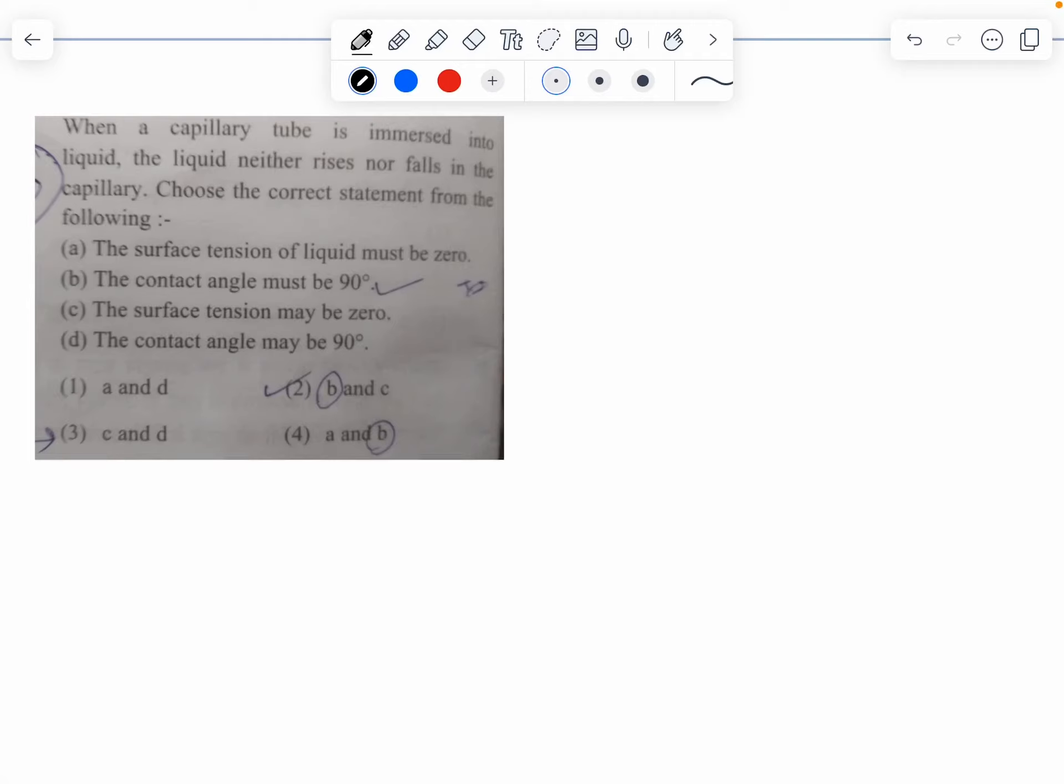This question is from capillary rise. If you go to the formula for capillary rise, h is equal to 2 times surface tension times cos theta divided by rho g.